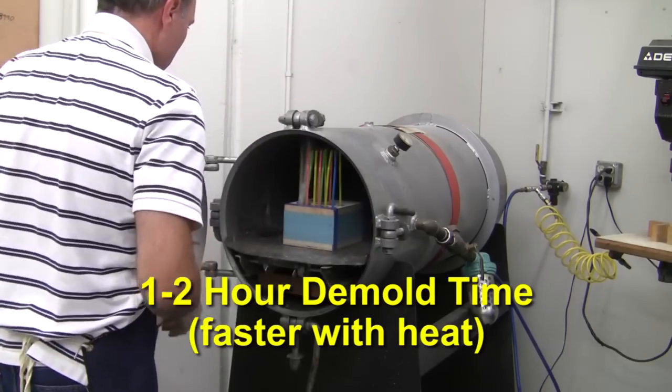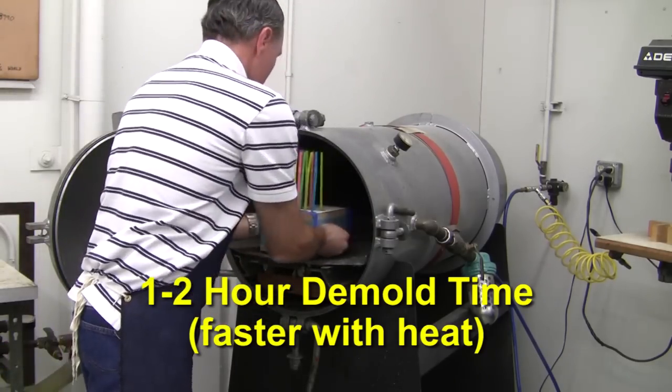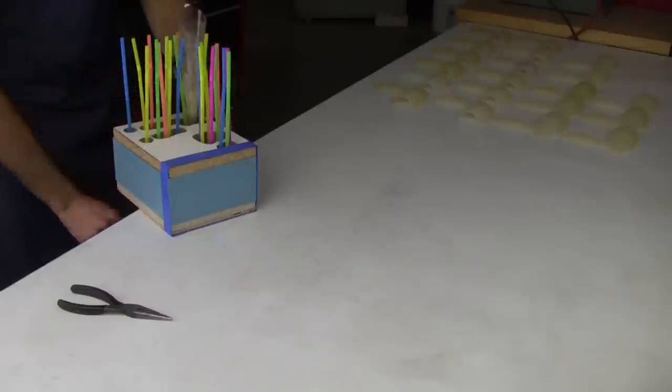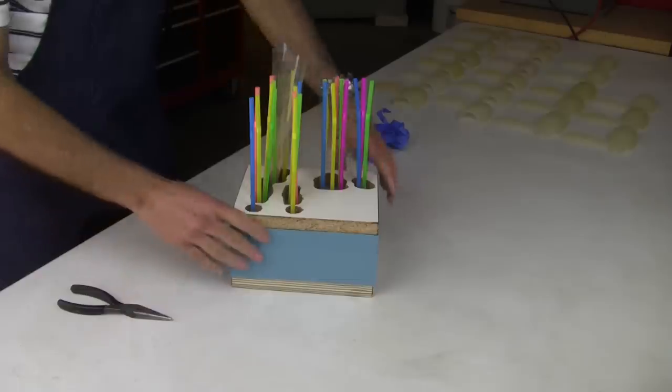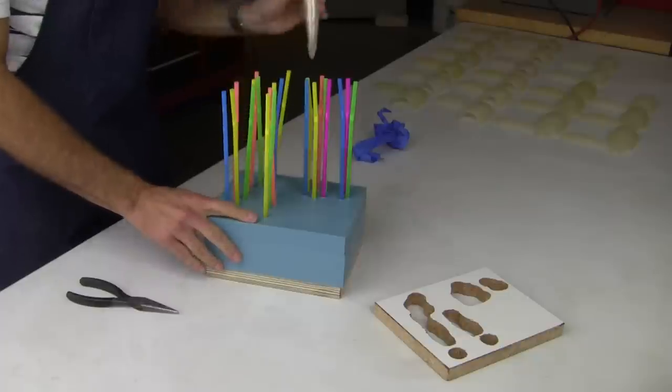Once the polyurethane has had time to cure, we remove it from the pressure tank. The tape holding the mold together is removed. Then, the process of removing the fill port and vents can begin. A quick twist with pliers easily removes them.